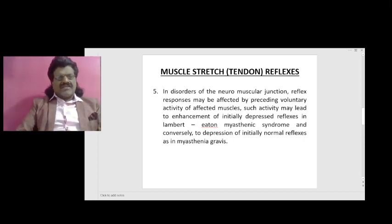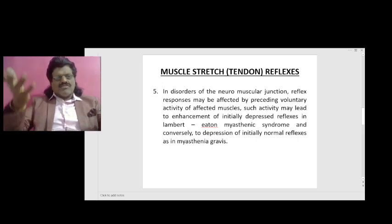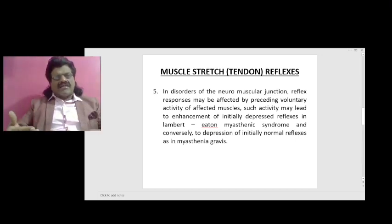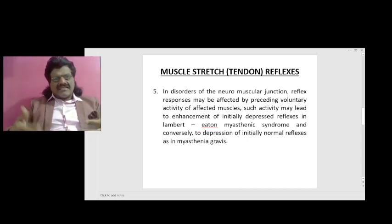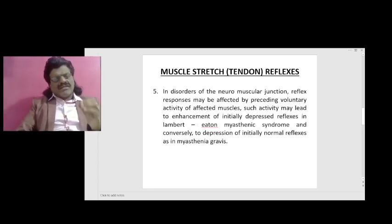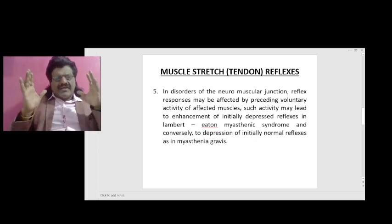Such activity may lead to enhancement of initially depressed reflexes in Lambert-Eaton myasthenic syndrome. In Lambert-Eaton, due to repeated activity there is release of calcium, which allows the reflexes to become enhanced. So initially in Lambert-Eaton myasthenic syndrome the reflexes may be absent, but with repeated activity, when the reflex is elicited again and again, it slowly becomes manifest — even becoming brisk — because repeated activity causes release of calcium.